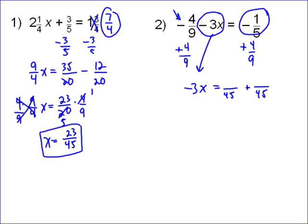To get to 45 from 5, I multiply it by 9, so this becomes negative 9. To get to 45 from here, I multiplied by 5. 4 times 5 is 20.